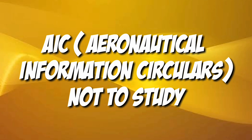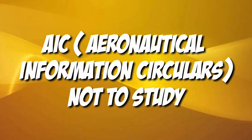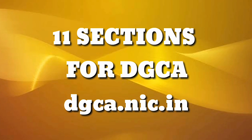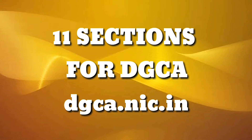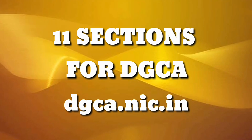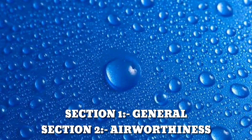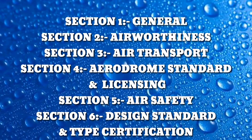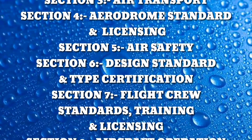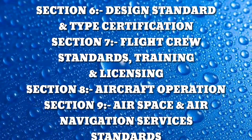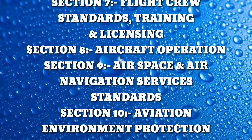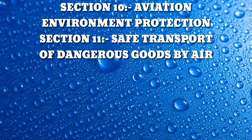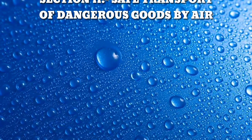The AIC (Aeronautical Information Circulars) are not very popular because DGCA rarely asks questions from this topic. Remember that there are 11 sections in general for DGCA. You can go through each section by visiting the official website dgca.nic.in — the link is in the description box. The 11 sections are: Section 1 General, Section 2 Airworthiness, Section 3 Air Transport, Section 4 Aerodrome Standard and Licensing, Section 5 Air Safety, Section 6 Design Standard and Type Identification, Section 7 Flight Crew Standard Training and Licensing, Section 8 Aircraft Operations (very important), Section 9 Airspace and Air Navigation Services Standards, Section 10 Aviation Environment Protection, and Section 11 Safe Transport of Dangerous Goods by Air. We have to study Section 2 very deeply.